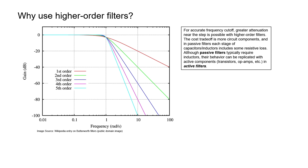Let's look at the frequency response of a few low-pass filters. Over here on the left, we have the magnitude of the transfer function plotted in decibels. On the x-axis, we have frequency plotted on a log scale. Zero dB corresponds to one, meaning the output voltage and input voltage are equal. This is a low-pass filter because all the low frequencies make it through, whereas the high frequencies are blocked.